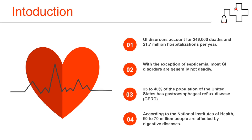Here are a few facts to emphasize the importance of understanding abdominal GI emergencies. GI disorders account for 246,000 deaths and 21.7 million hospitalizations per year — quite a lot. With the exception of sepsis, most GI disorders are generally not deadly. 25 to 40% of the population has GERD or esophageal reflux disease, sometimes called acid reflux. According to the National Institute of Health, 60 to 70 million people are affected by digestive diseases.